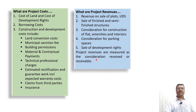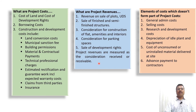Project revenues are measured as the consideration received or receivable — on an accrual basis, whether received or not, it has to be considered as revenue. The guidance note also specifically mentions what costs do not form part of project cost: general administrative costs, which are not project-specific, and selling costs like brokerage and marketing expenses.